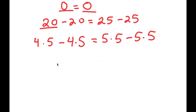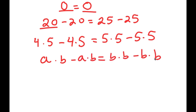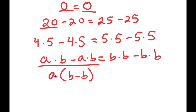If I have something in the form a times b minus a times b is equal to b times b minus b times b, notice how we can simplify this by factoring out the greatest common factor. From my left-hand side, we have a greatest common factor of either a or b because both of them appear in both terms. So I'm going to rewrite this as a times (b minus b) — basically, I factored out a. From my right-hand side, I'll factor out b, so I get b times (b minus b).